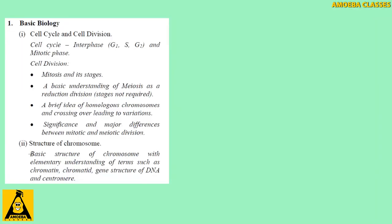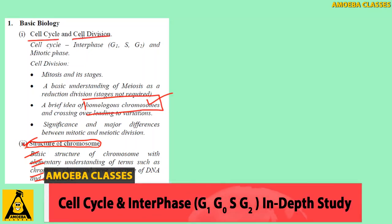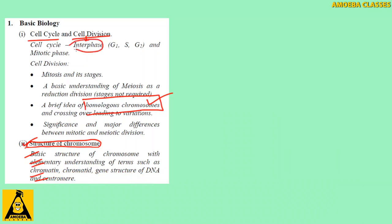In lecture one we discussed the structure of chromosomes and the definition of homologous chromosomes. Today we will be continuing with the cell cycle and cell division. Specifically, we will discuss interphase, including G1, S, and G2 phases. The third video will cover the mitotic phase in detail. Today's lecture will also cover basics about chromosomes, haploid, diploid, somatic cells, and germinal cells.